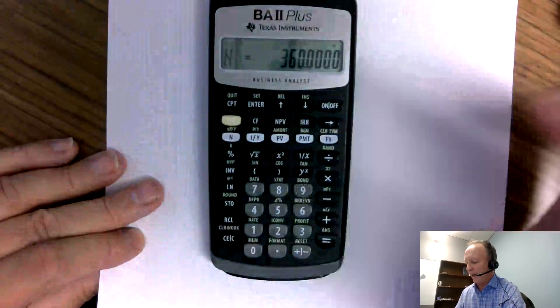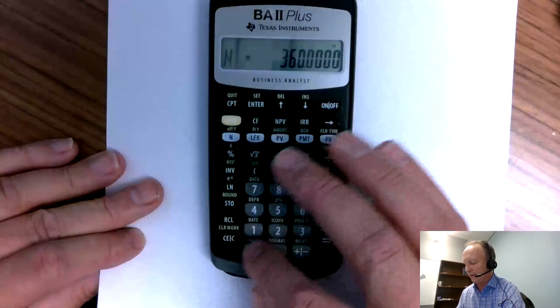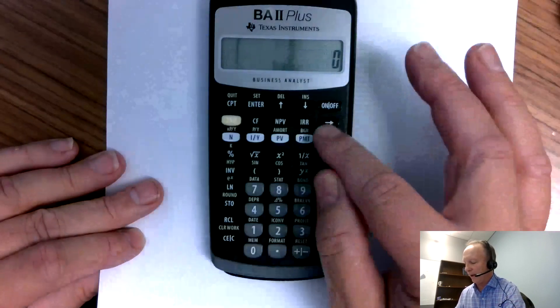And the future value is going to be zero because after 30 years, there's going to be no more payments and there's no balloon payment at the end. So zero FV.